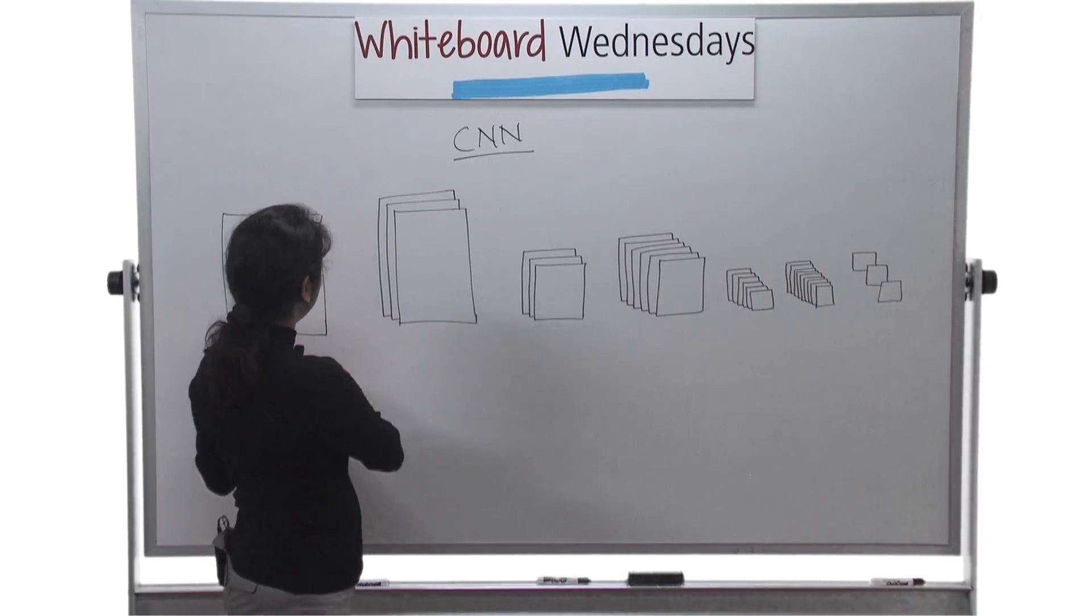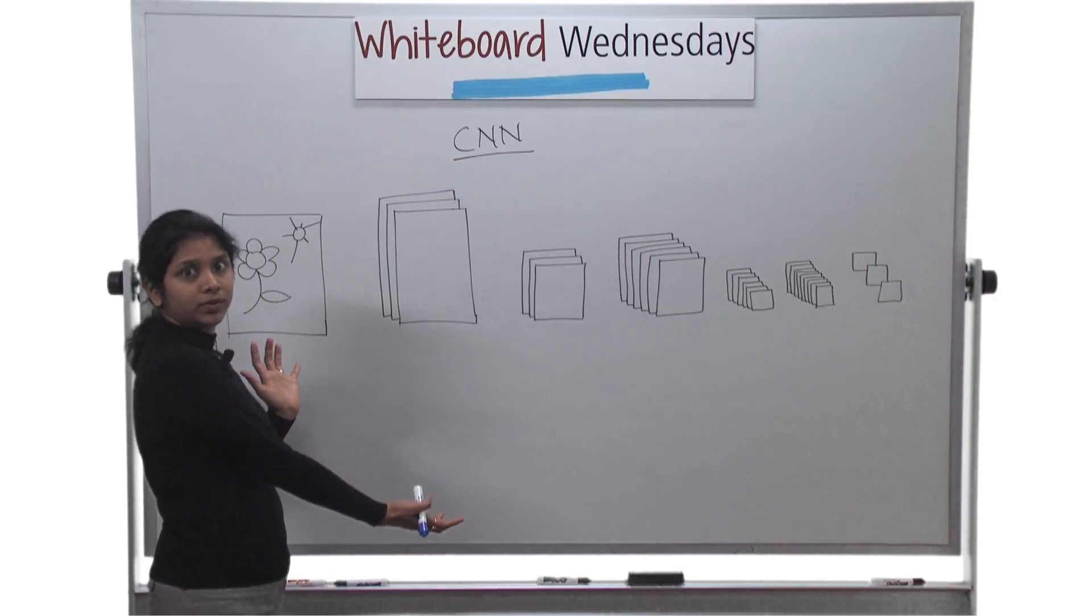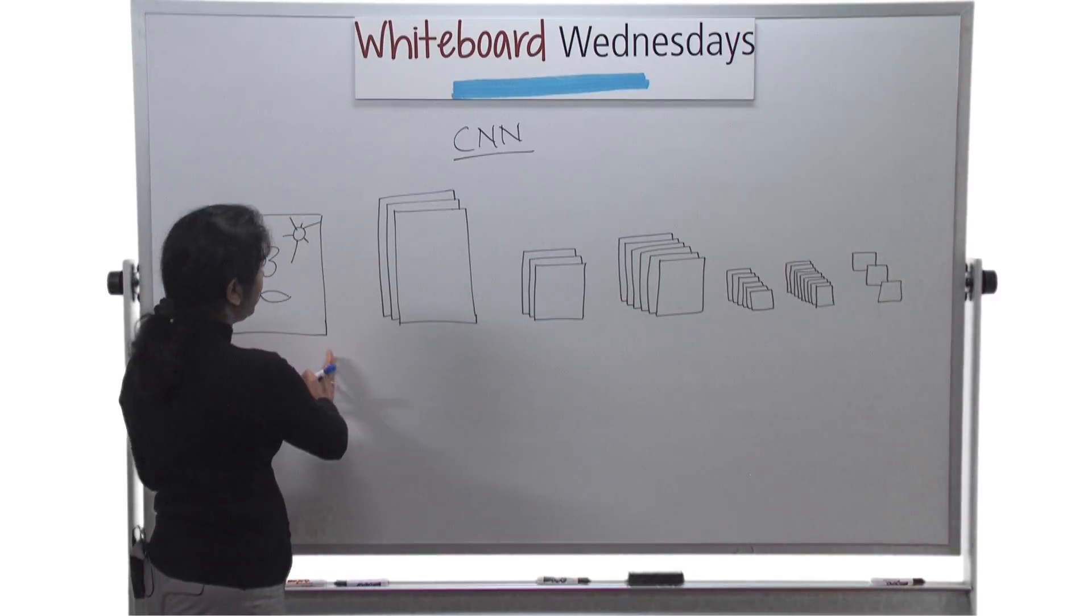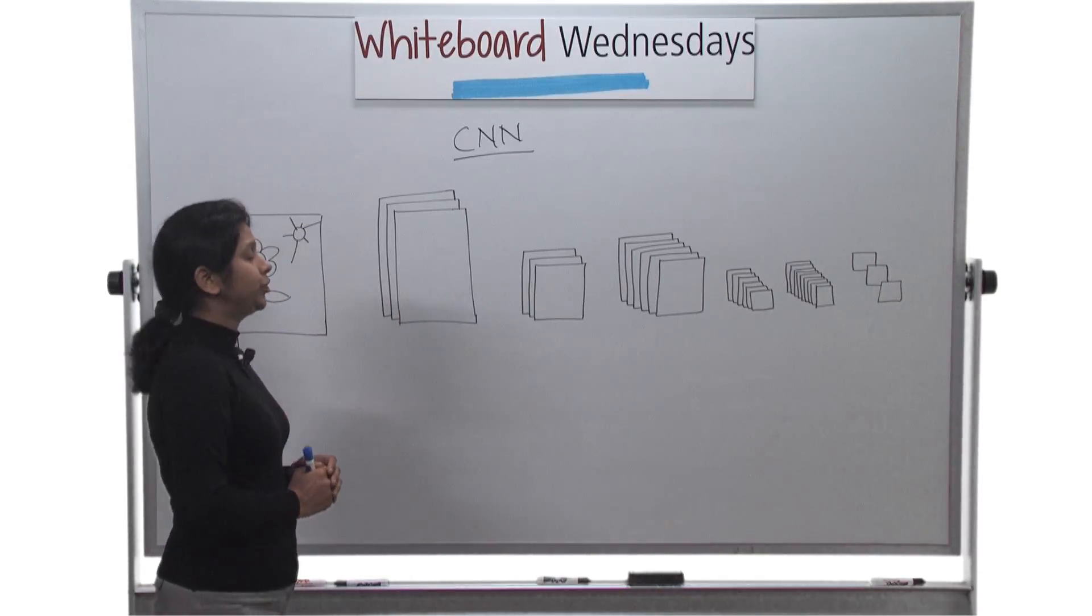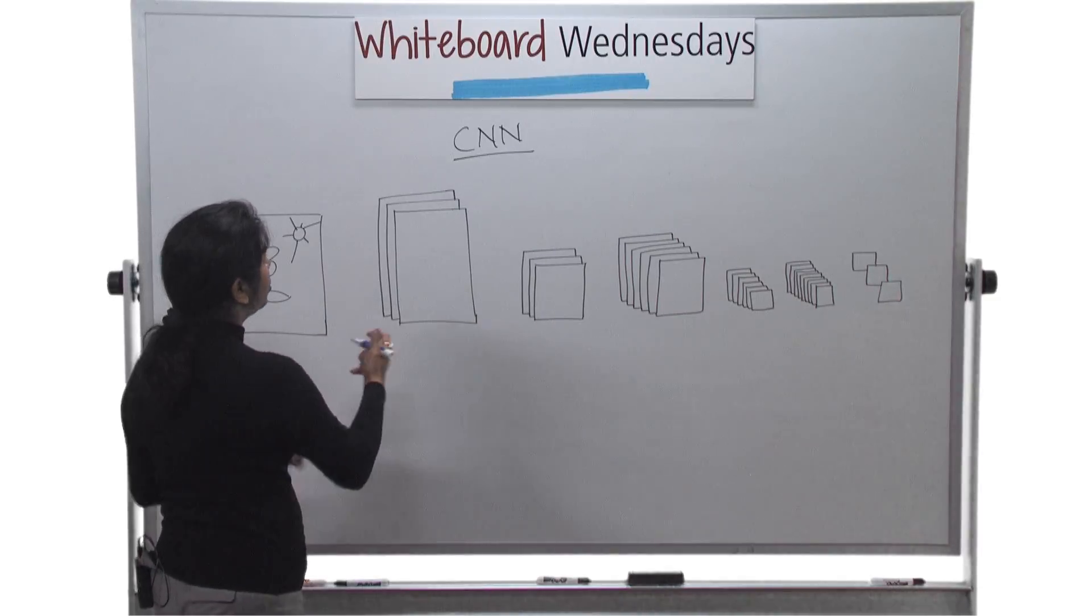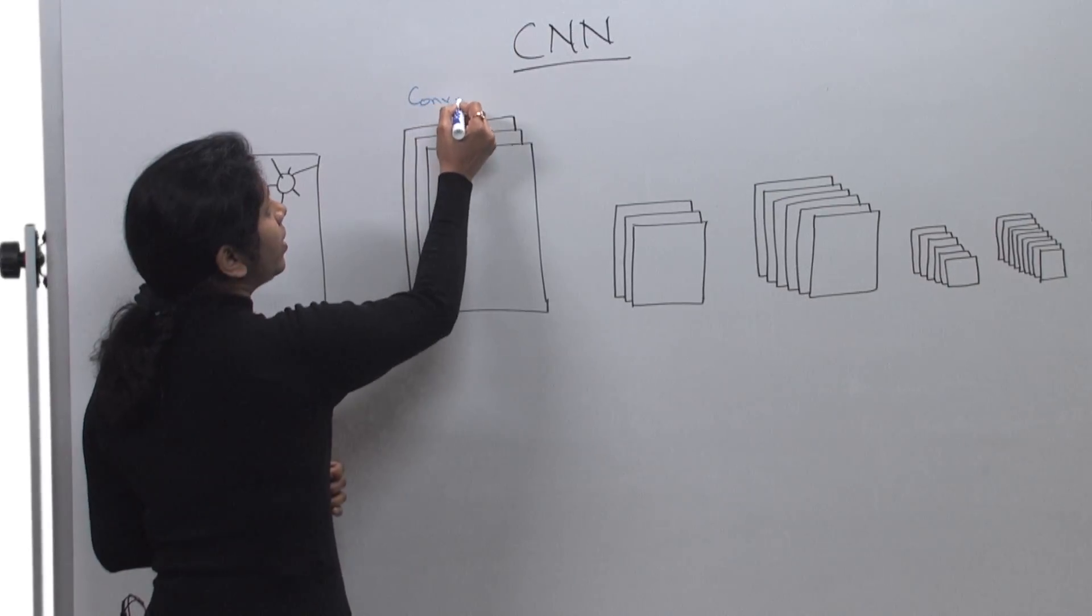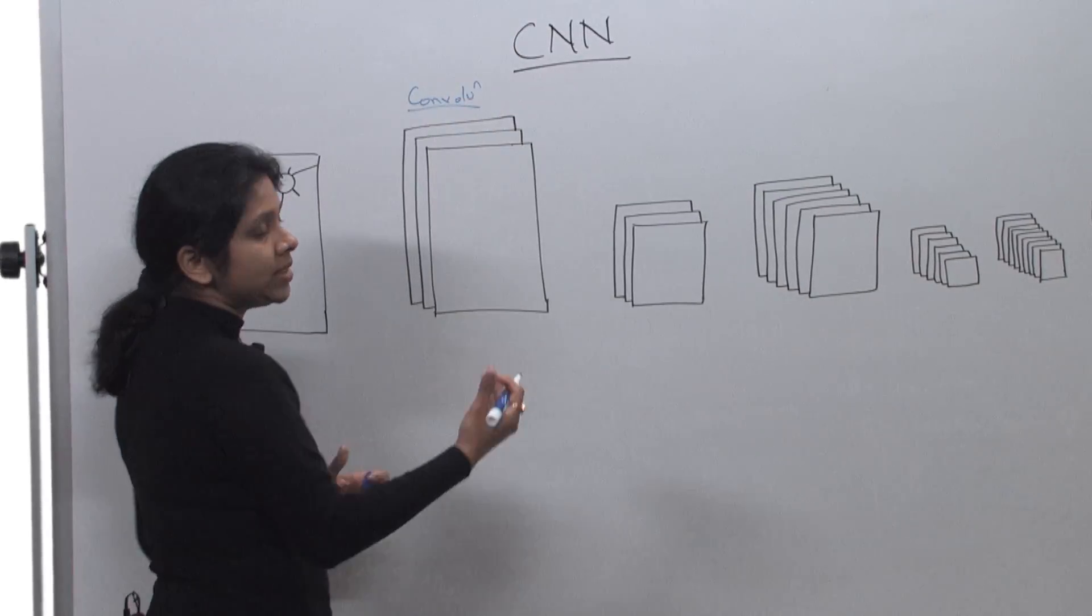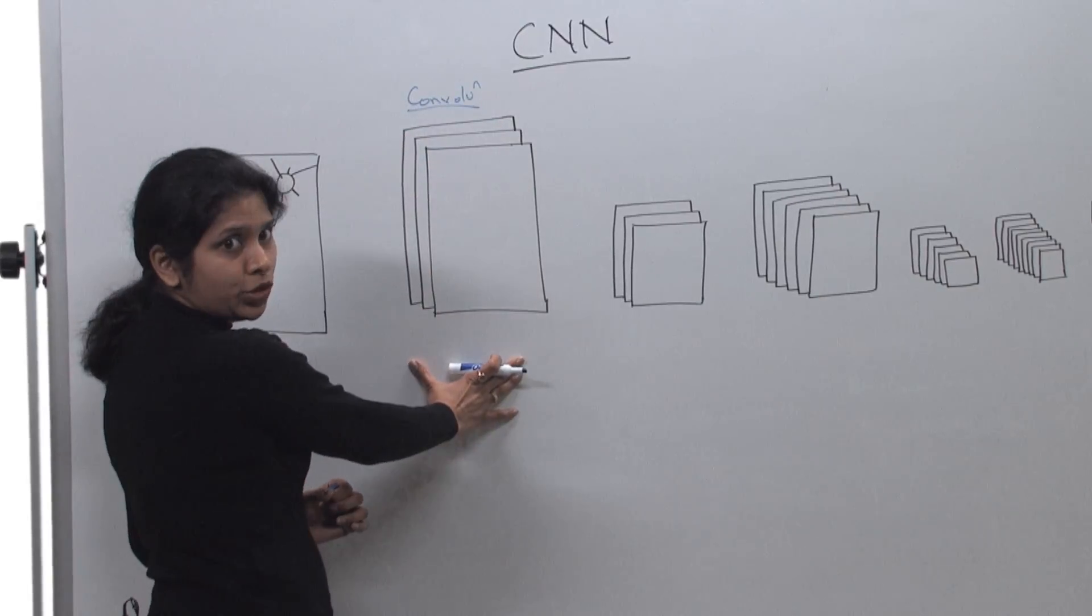Here is a simple diagram of how a convolution neural network will look like. As we can see there are different layers which I'm showing here an image is going through. So let's say I have an input image. This input image goes through bunch of layers. There are different layers which we will talk about in detail later on. But to start with, these are a bunch of convolution layers.